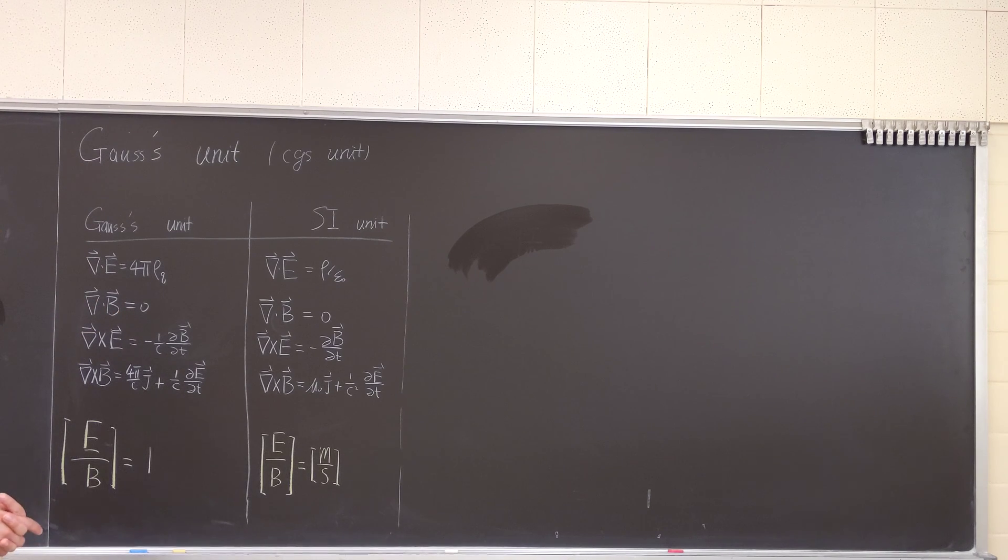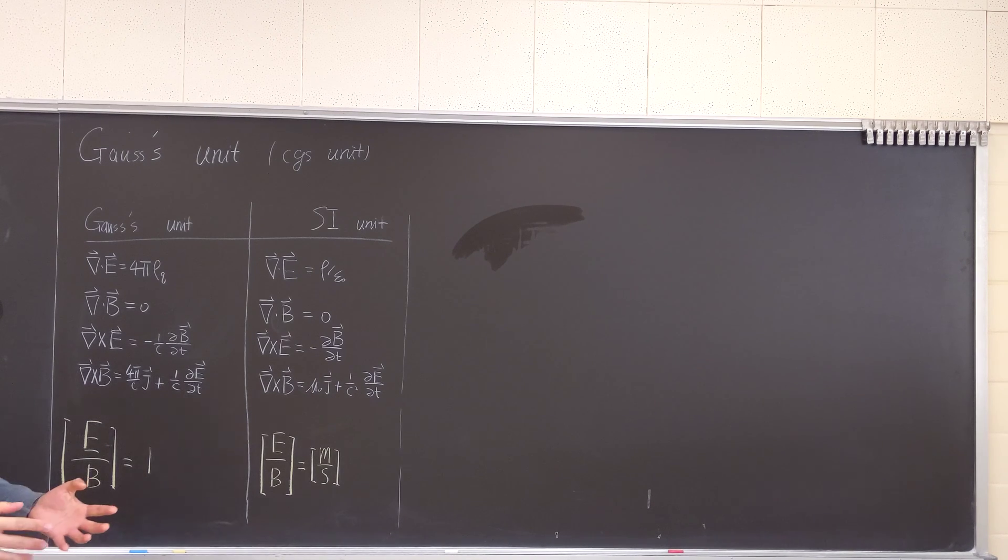The benefit of that is just for us, easy to check some units, and for instance, if you're talking about E cross B drift, you just have E cross B over B squared, definitely know that it's a velocity, because E and B have the same unit for Gauss's unit.